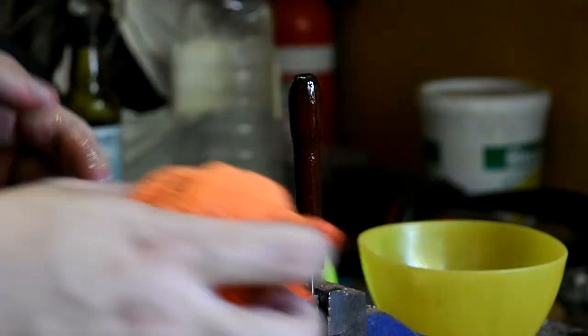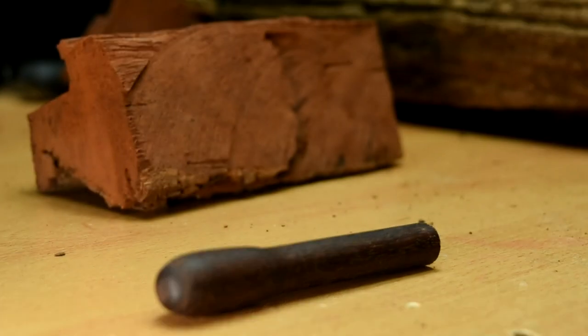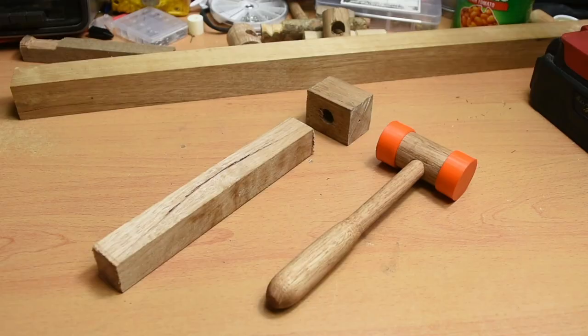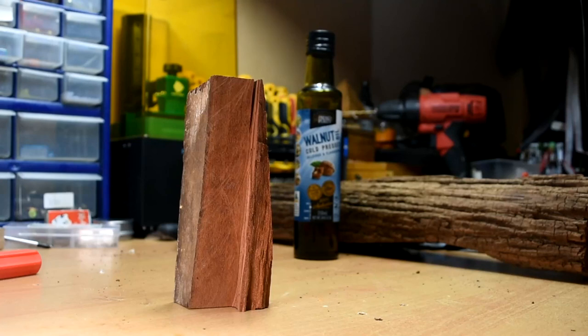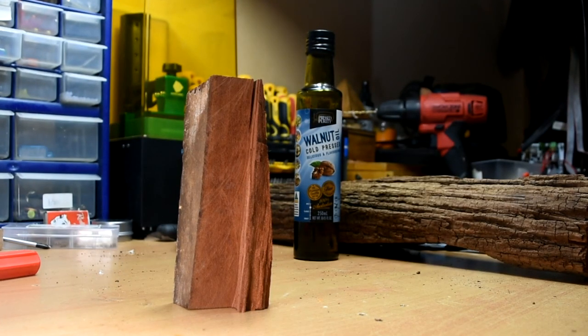I again used walnut oil, and I couldn't be happier with the resulting color. When I've used walnut oil on olive and Tasmanian oak, the color change was pretty minor, but on this red gum it resulted in this beautiful dark brown, which I wasn't expecting. I'll definitely be using this combo again in the future because of how great it looks.